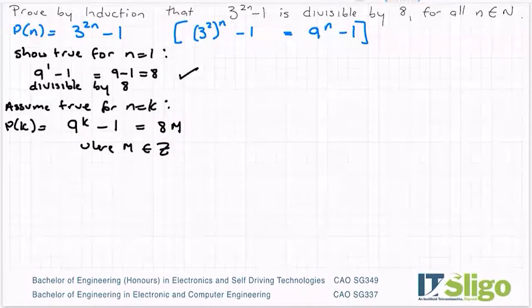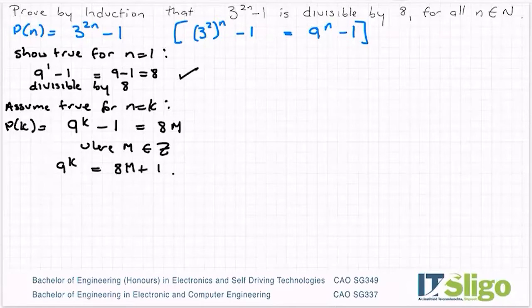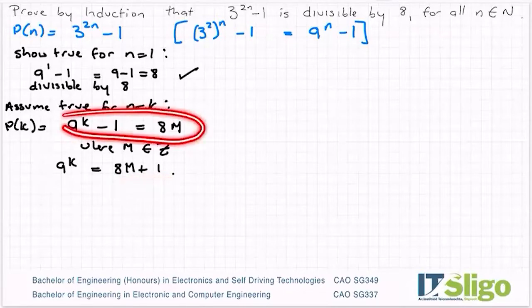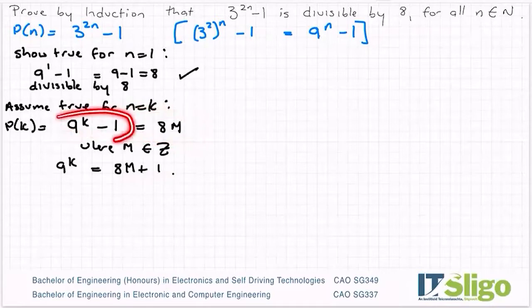Or I can say then that 9^k = 8m + 1. Whether you do that little piece that I just did there now or not, or you leave it like here, you would get the same marks. You'll see in a minute why I wrote it in terms of 9^k.